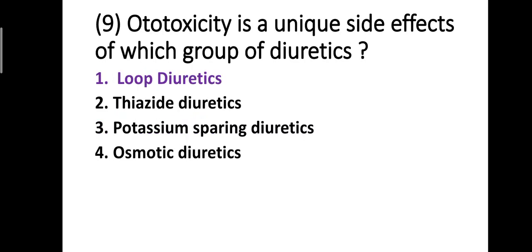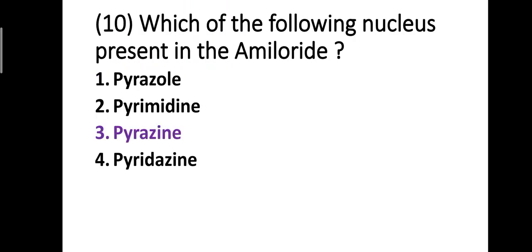Question number nine: ototoxicity is the unique side effect of which group of diuretics? Option one: loop diuretics, option two: thiazide diuretics, option three: potassium sparing diuretics, option four: osmotic diuretics. The correct answer is option one — ototoxicity is the side effect of loop diuretics.